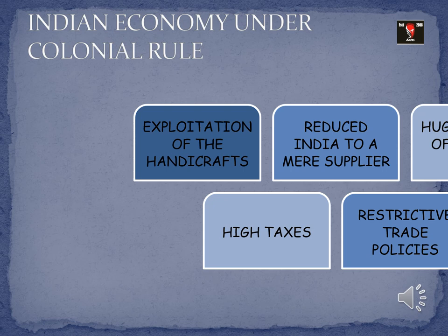Next was the huge import of foreign goods. Since most raw materials were sent to Britain, very little was available for domestic production. Britain imported a lot of goods manufactured in their nation, flooding the Indian market. People had no option but to purchase them as they were available at a lesser price — the import duty was either very low or zero. Meanwhile, domestically manufactured goods faced high taxes and inferior raw materials, making foreign goods far cheaper and more affordable.